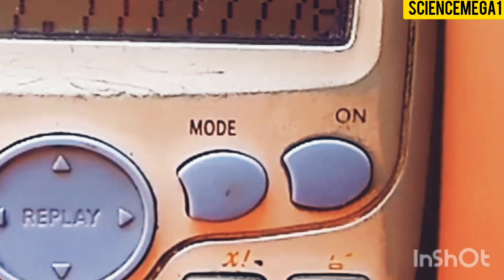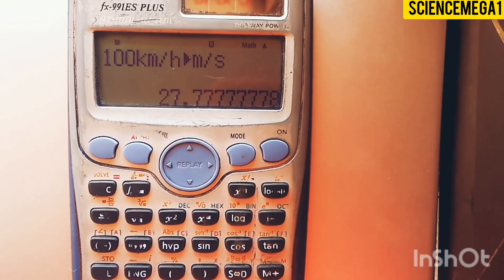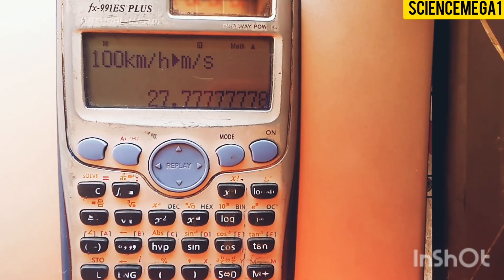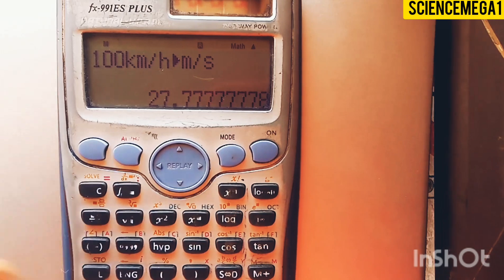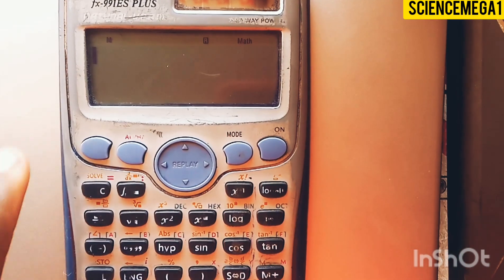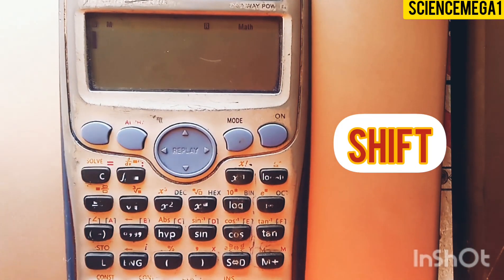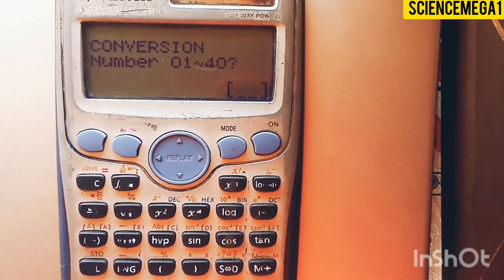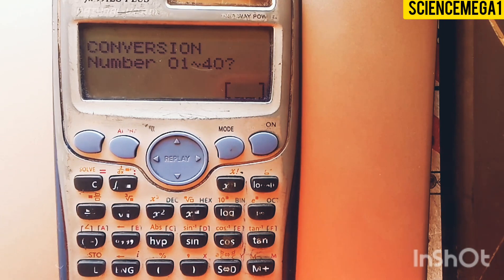Hi, you are welcome. If you want to know how to convert kilometer per hour to meter per second, let's begin. First of all, you enter shift and then 8, so there it comes: conversion number 01 to 40.